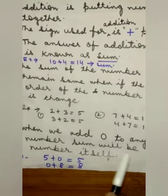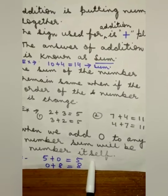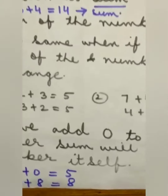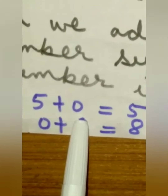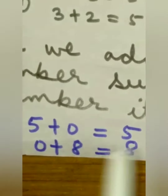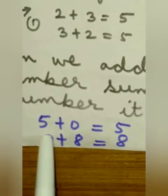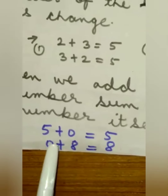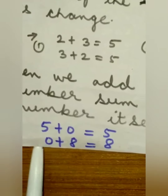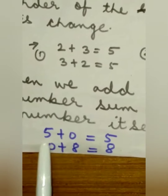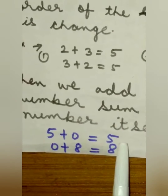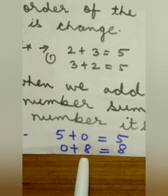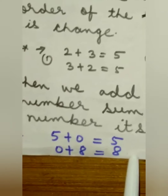Fifth point: when we add zero to any number, the sum will be the number itself. When you add zero with any number, the result will be the number itself. See here: 5 plus 0, the answer is 5. Zero plus 8, the answer is 8.